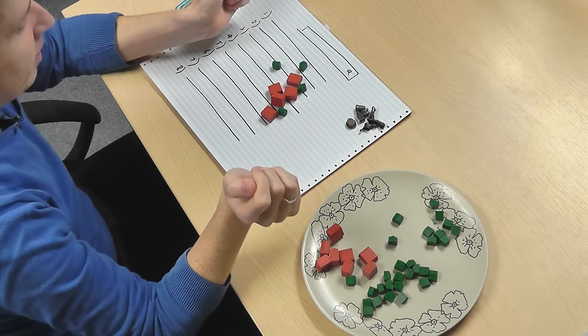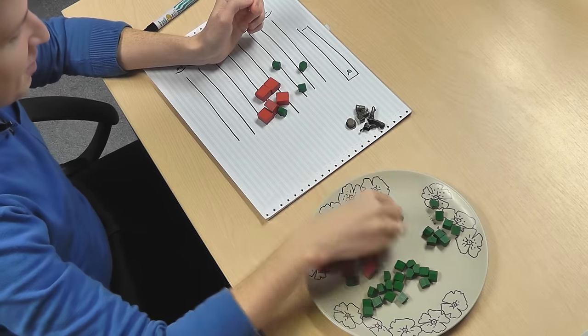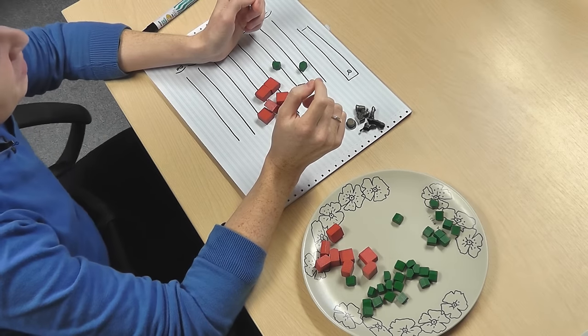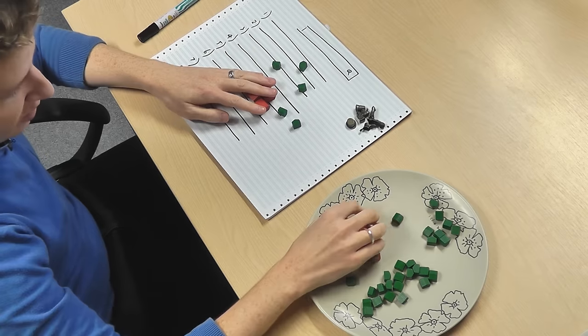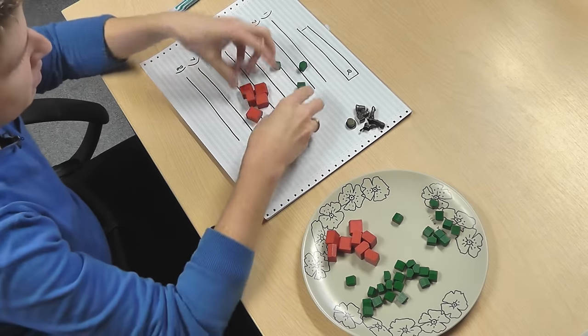Now the second thing is precision and this is the number of returned results which are actually relevant. So say my search engine brought back these results then its precision is five out of ten so it's got fifty percent precision. In this case its recall was five out of a possible thirteen so the recall here is five out of thirteen and the precision was five out of ten.